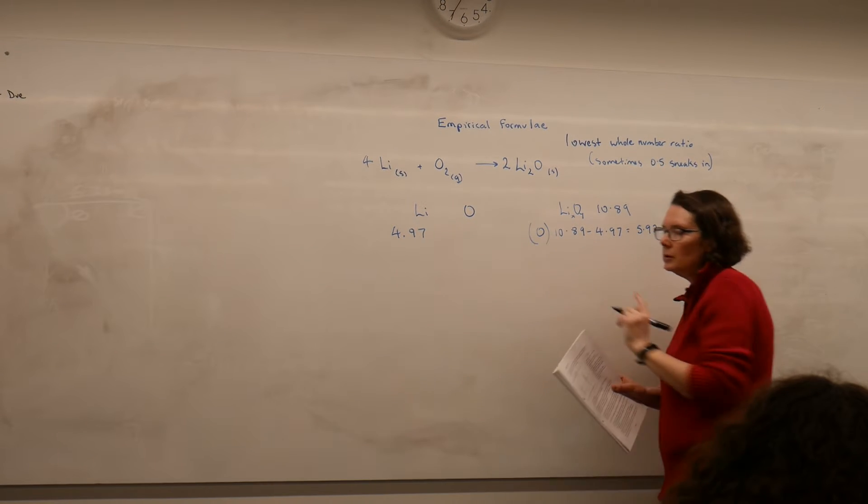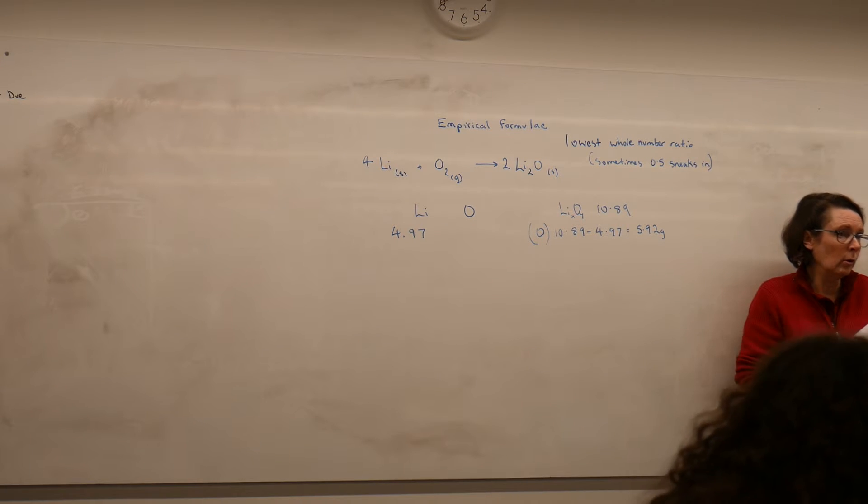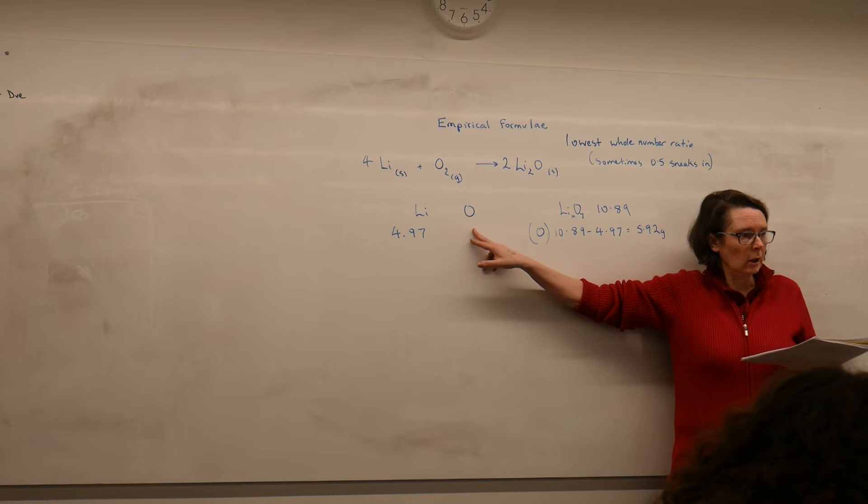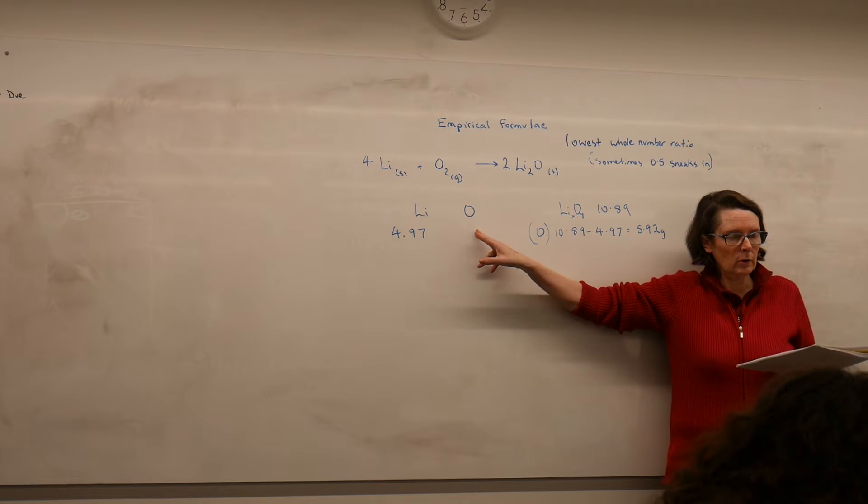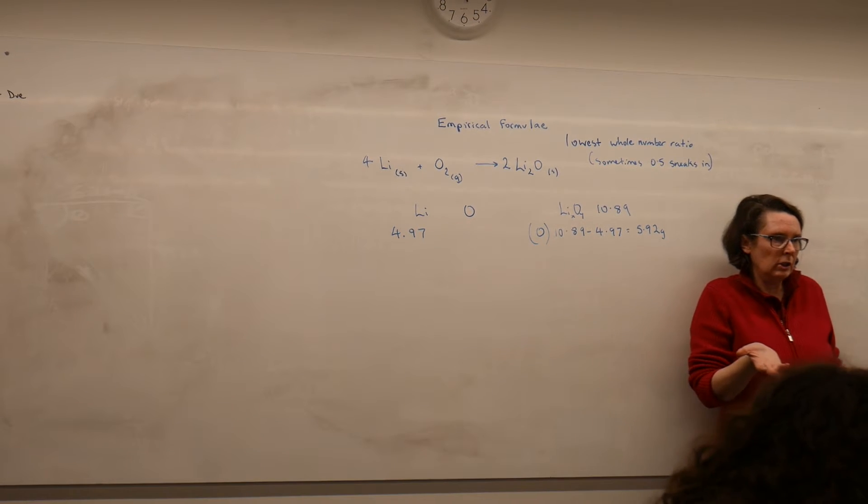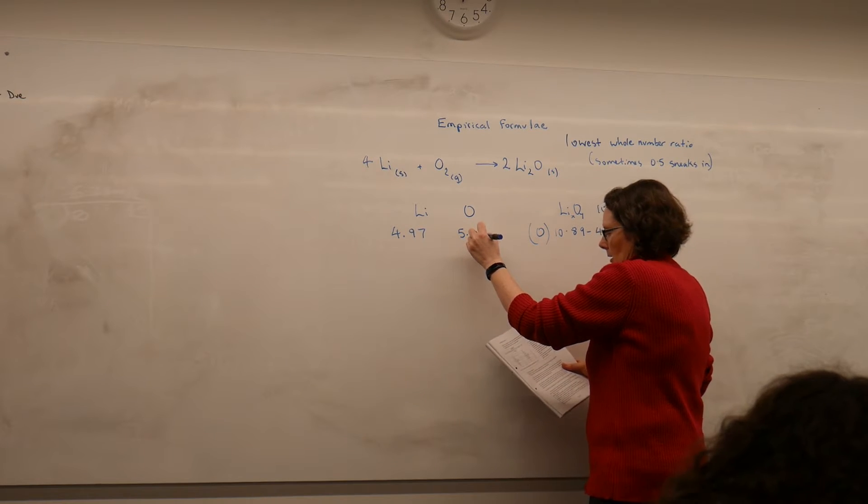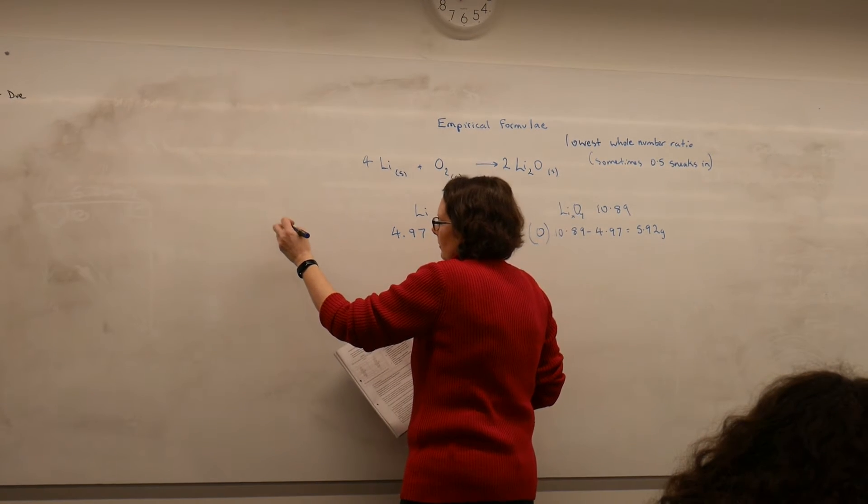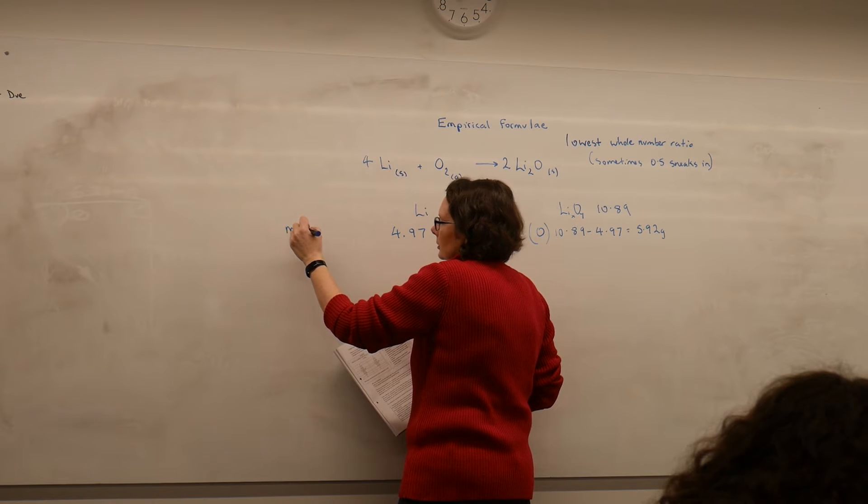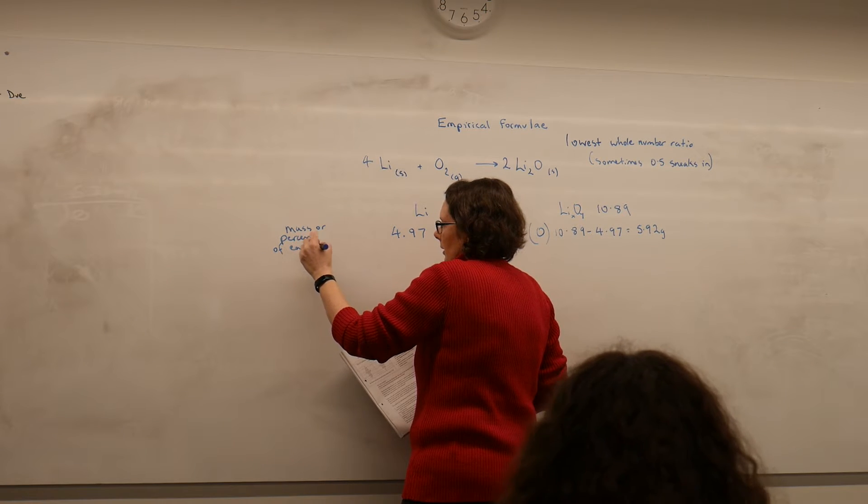Now notice that when we're talking about finding the empirical formula or finding out the percentage of an element in a compound, I'm not writing it as O2 here. I'm writing it as oxygen because I want to find out how much oxygen is in the lithium oxide, not oxygen gas. So we start our process with the mass or percent of each element.